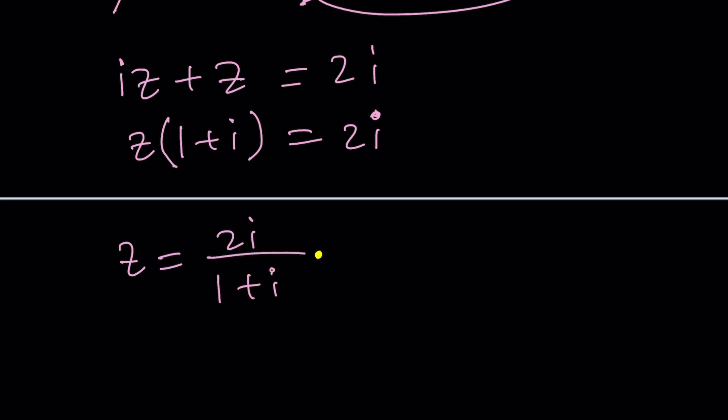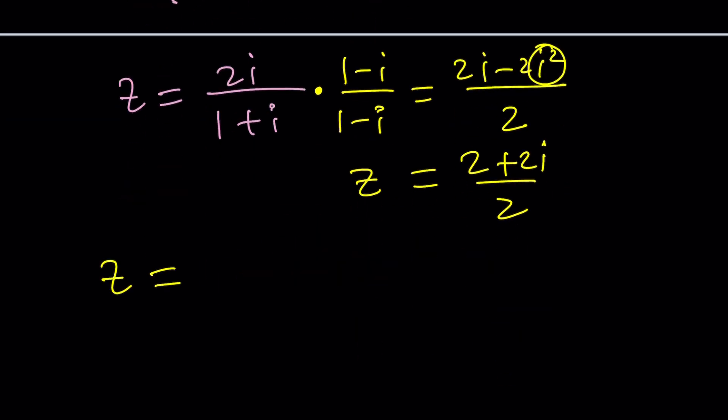Multiply by the conjugates. Then you get 2I minus 2I squared divided by 1 plus 1, which is 2. That is, I squared is negative 1. So, that's a positive 2 plus 2I divided by 2. So, Z is 1 plus I. Wow! It's that simple? Well, sort of.